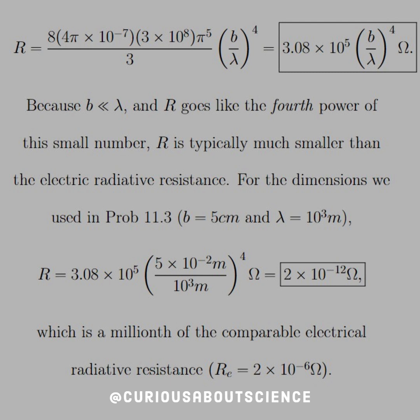Okay, but here, because B is much less than lambda, and R goes like to the 4th power, right, clearly with the B over lambda to the 4th, that is going to be really small.